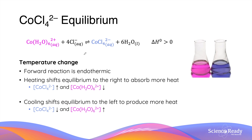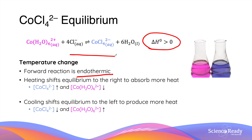The forward reaction of this reversible system is endothermic, as the enthalpy change given is positive. To examine the effect of temperature changes on equilibrium systems, it is important to determine whether the reaction is endothermic or exothermic. Heating or an increase in temperature will shift the equilibrium to the right hand side, as this will favour the endothermic forward reaction. By doing so, the reaction is able to absorb more energy from the surroundings in order to reduce the energy in the environment.